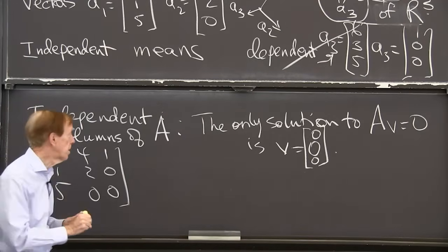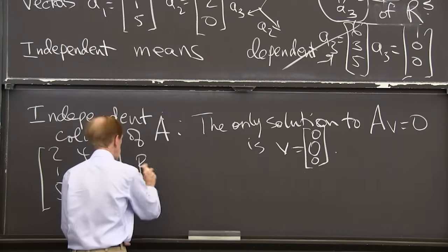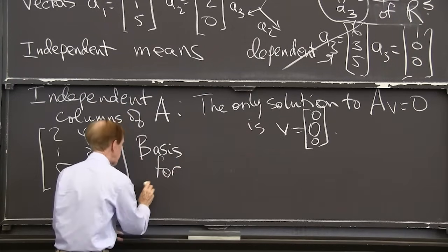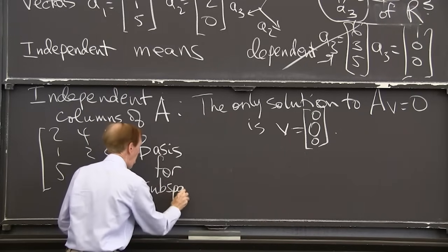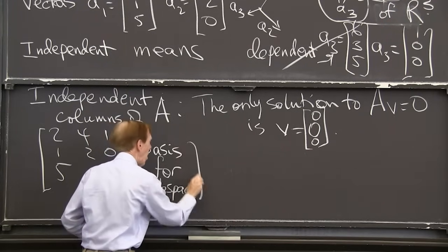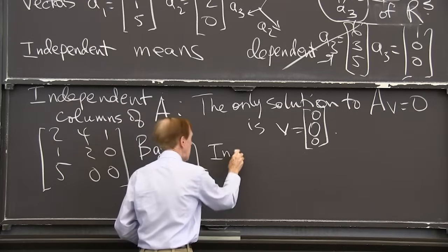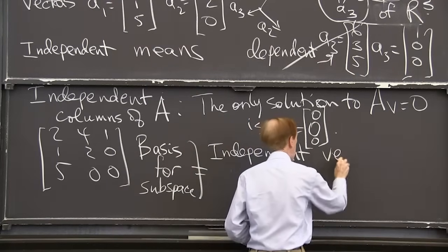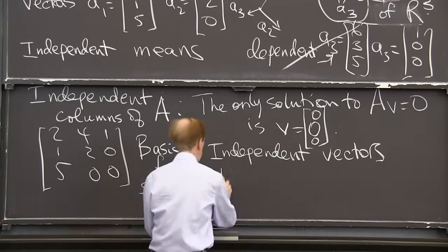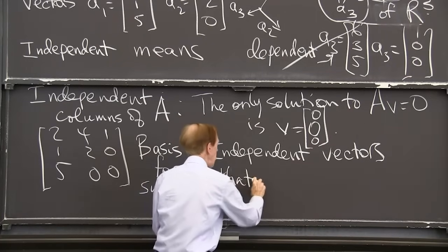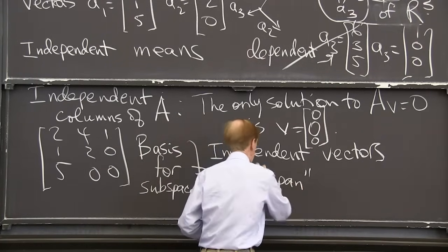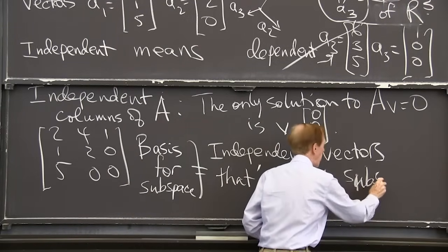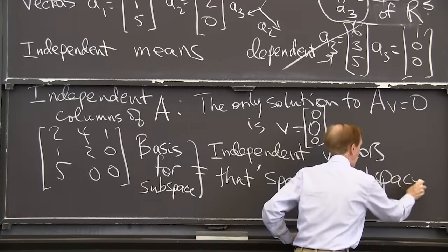So what is a basis for the space? A basis for a space, a subspace. Independent vectors, that's the key. Independent vectors that span the space. That's the subspace, whatever it is.